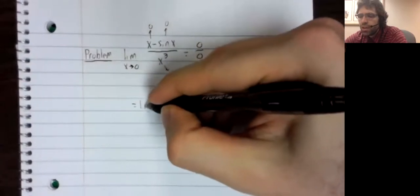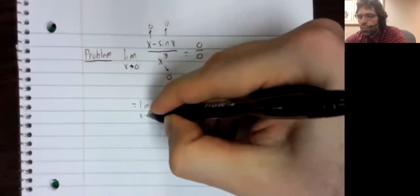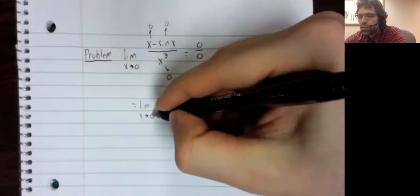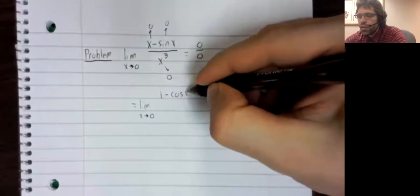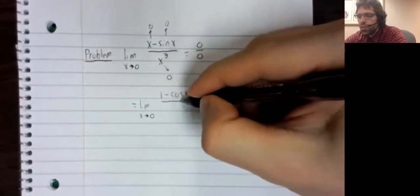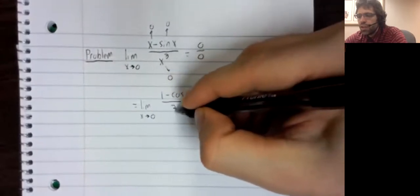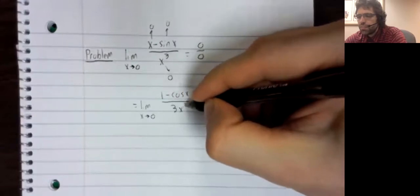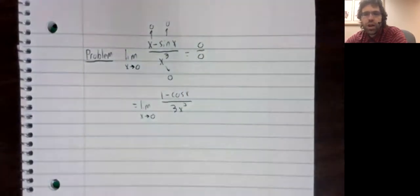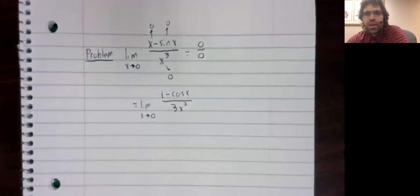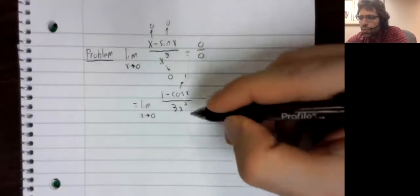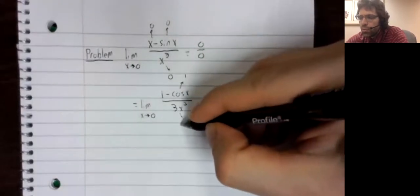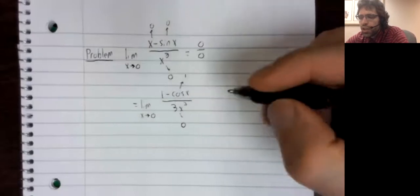So, we'll try L'Hôpital's rule. We'll try the derivative of the numerator over the derivative of the denominator. Can we take this limit as x goes to 0? Well, no. At least not straight away.